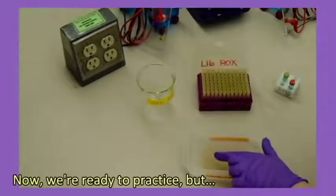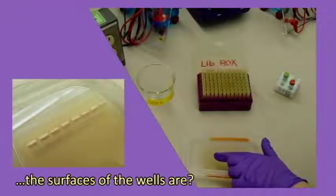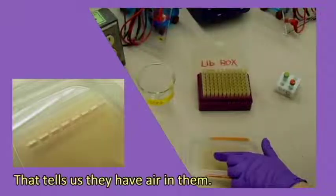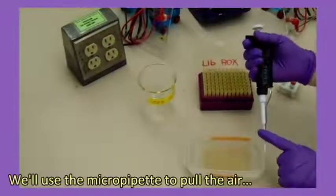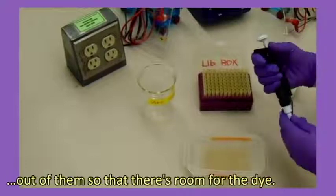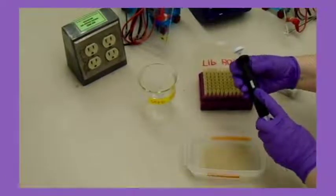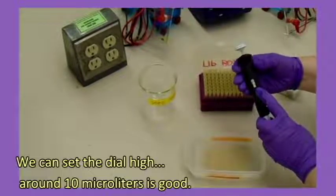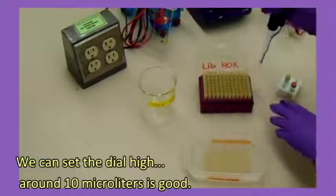Now we're ready to practice, but see how bright and shiny the surfaces of the wells are? That tells us they have air in them. We'll use the micropipette to pull the air out of them so that there's room for the dye. We can set the dial high. Around 10 microliters is good.